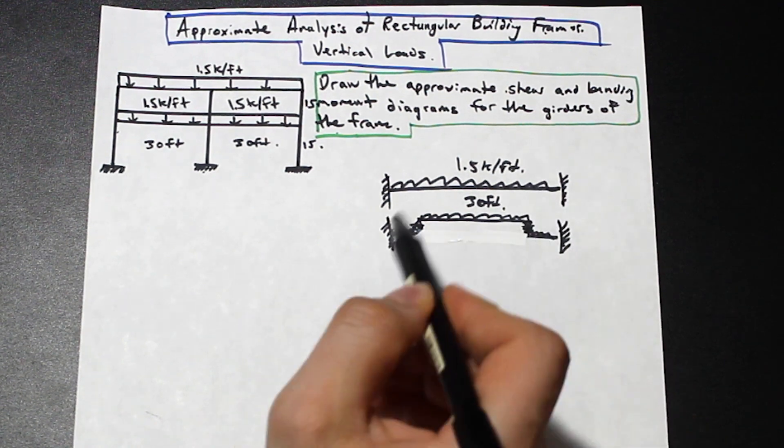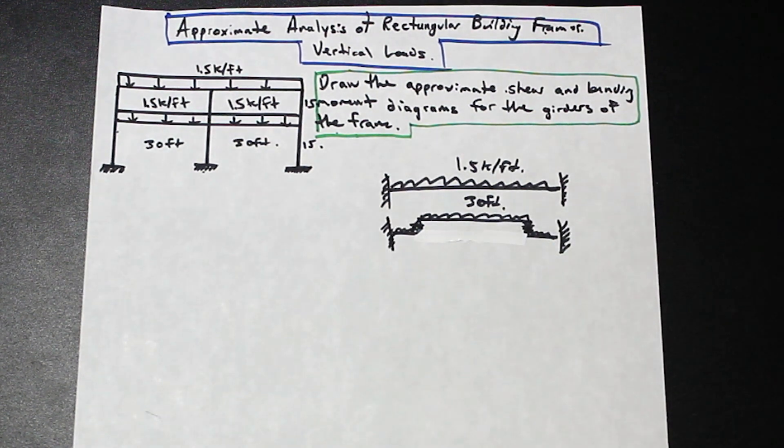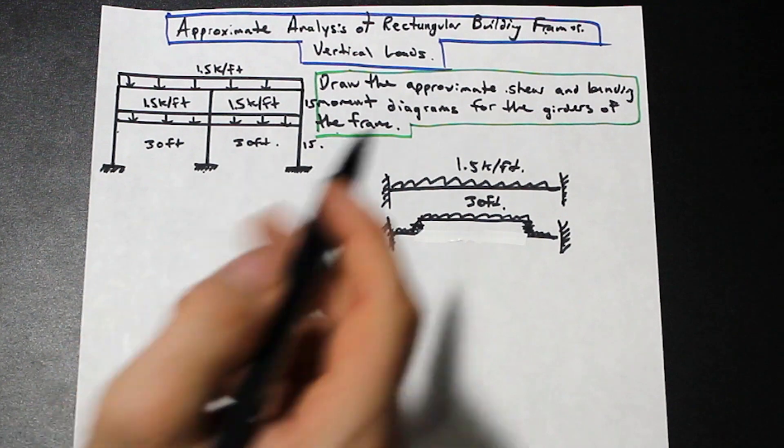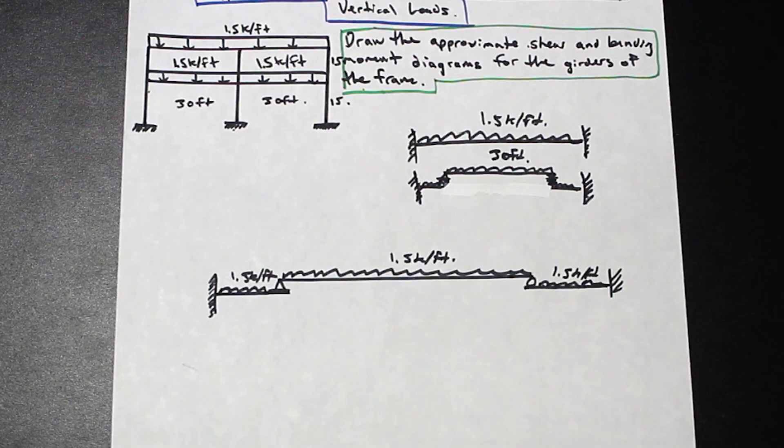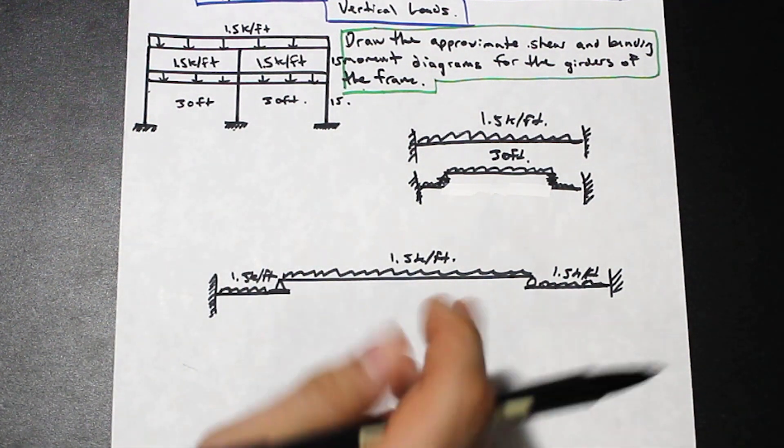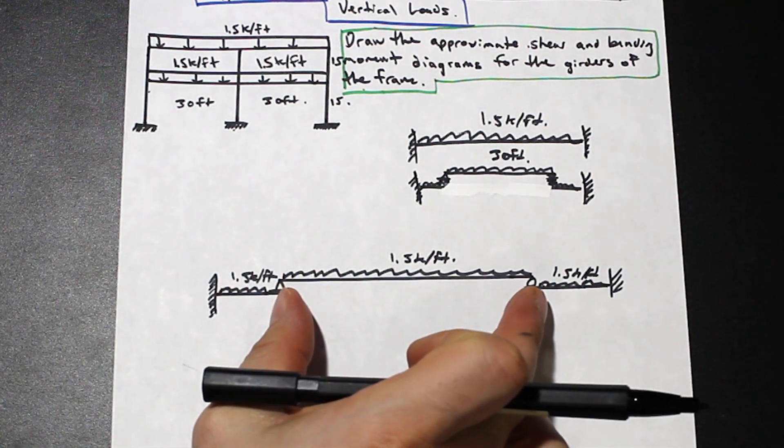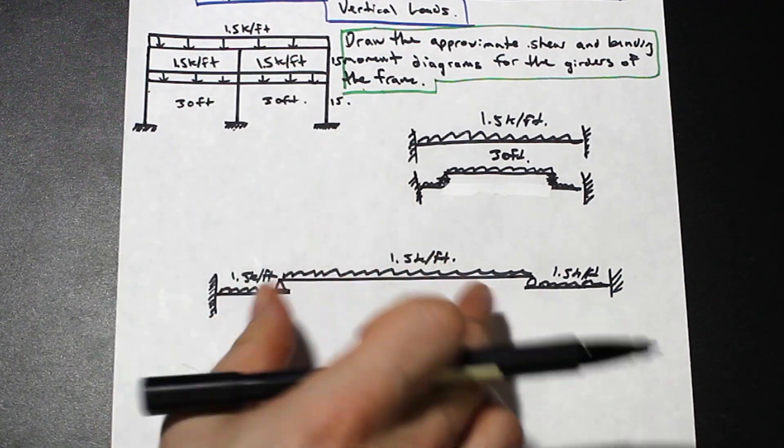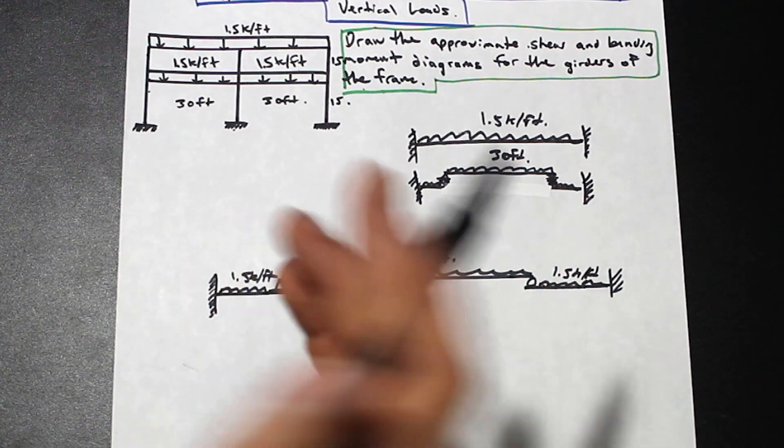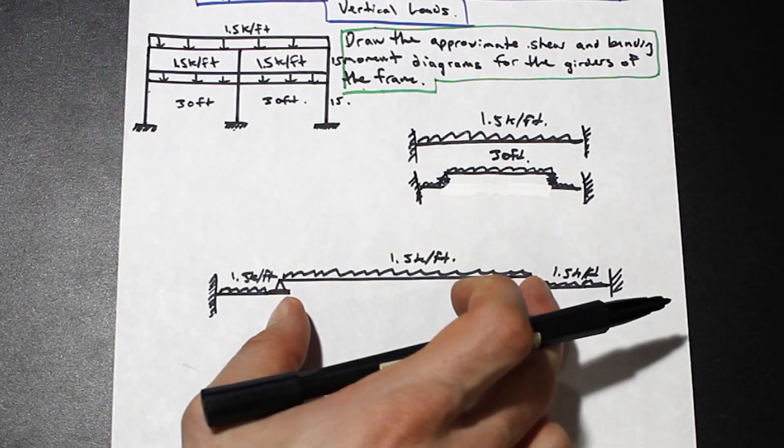So now that I've shown you how to model it, let's go ahead and let's start to solve this problem. So I'm going to redraw this here. So that's exactly what we did. We made the assumption that the inflection points are at 0.1L because we're not given information about the restraint. And then we assume that we can make that a simply supported beam.